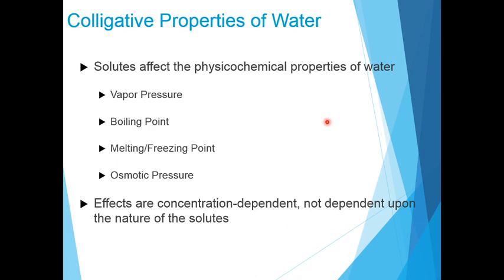Consider sodium chloride (NaCl) and sucrose dissolving in water. NaCl dissociates into Na⁺ and Cl⁻, whereas sucrose does not dissociate. Therefore, NaCl dissolution in water has an effect on osmotic pressure that is twice that of an equal number of moles of sucrose, because colligative properties depend on the number of solute particles.